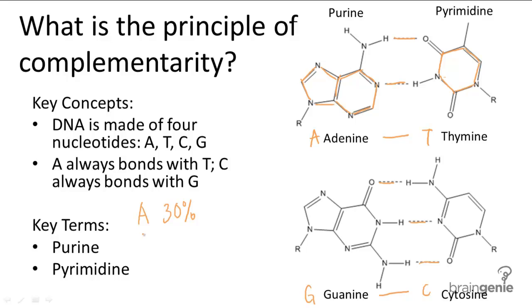from that number we can determine the percentages of all the rest of the nucleotide bases. Thymine is equal to adenine in its count, and so it also takes up 30% of the DNA.